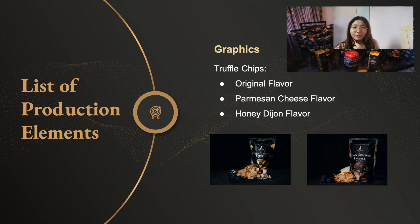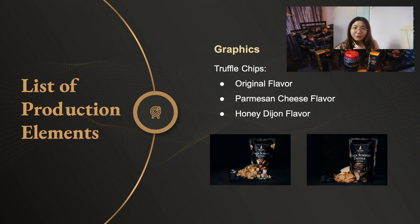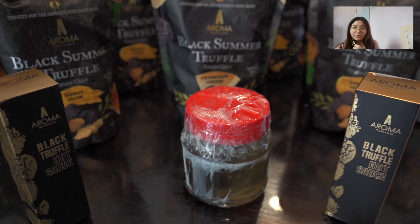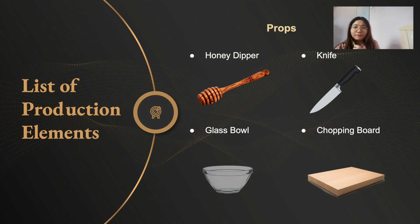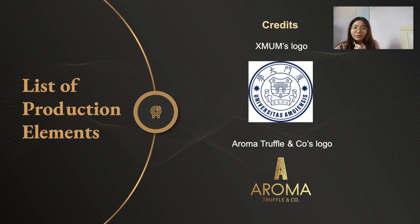The main graphics element is the product itself — three different flavors of truffle chips: original flavor, parmesan cheese flavor, and honey dijon flavor. We will also use raw ingredients such as truffles, fresh herbs, potatoes, honey, and parmesan cheese to reflect the ingredients of the chips. Props include a honey dipper to drip honey on the chips, a knife and chopping board to cut potatoes, and a glass bowl to display the chips. The SIAM University Malaysia logo and Aroma Truffle logo will be credited in both videos, with the Aroma Truffle logo in gold with a transparent background.